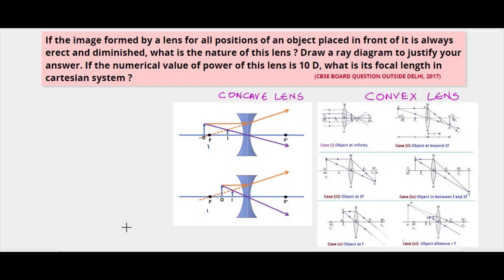Hello students, welcome back. Let's have a look at the next question. The next question is a numerical from the light chapter. It goes like this: if the image formed by a lens for all positions of an object placed in front of it is always erect and diminished, what's the nature of this lens? Draw a ray diagram to justify your answer.